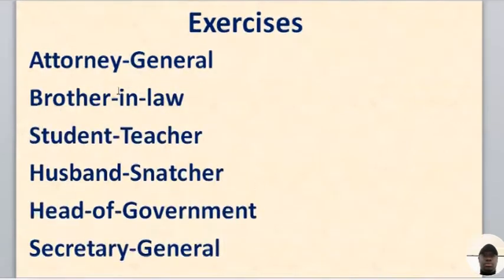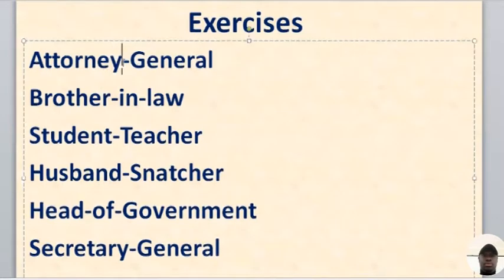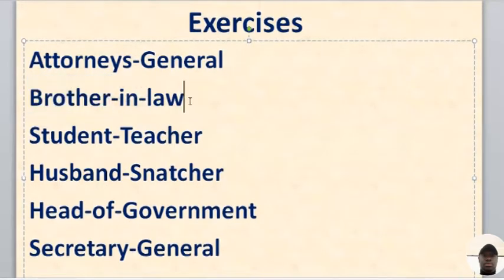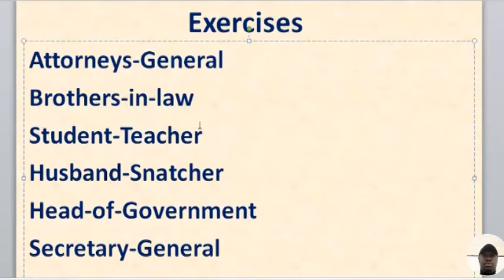Now let's try some examples. For attorney general — remember the rule: if a compound word contains a noun and an adjective, just pluralize the noun. The noun here is attorney; general is an adjective. So the correct form is attorneys general. And the correct form for brothers-in-law follows rule three: if the compound word contains a noun and a prepositional phrase, just pluralize the noun. So brothers-in-law.